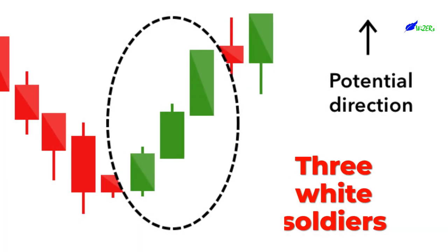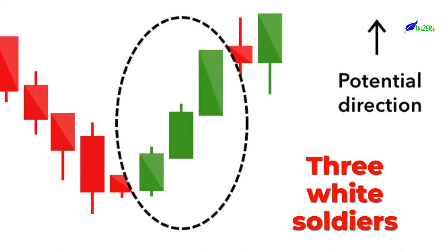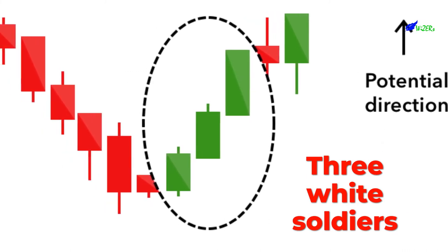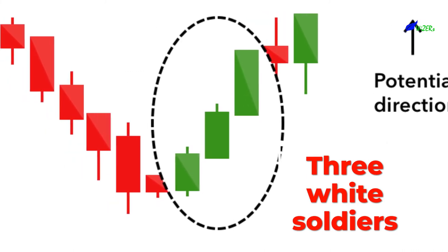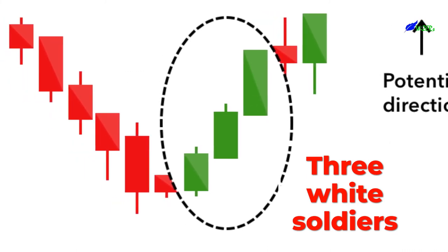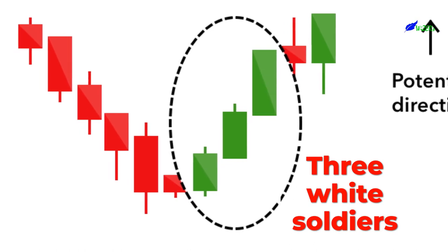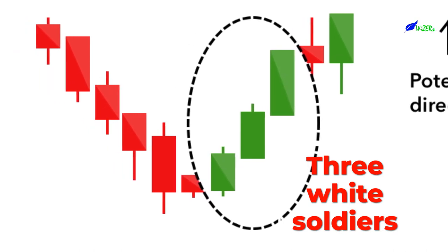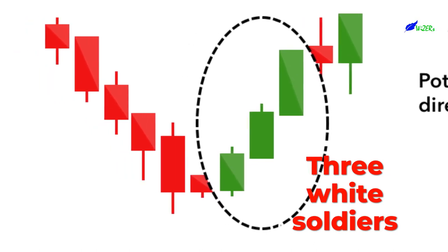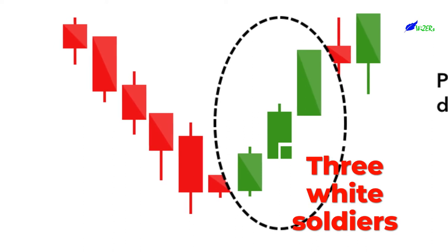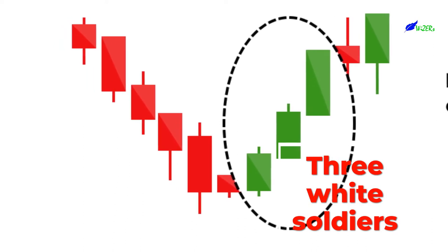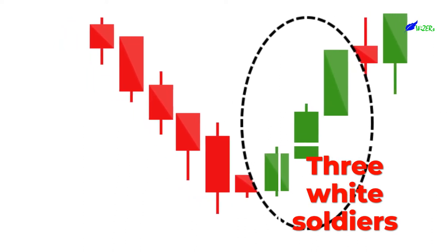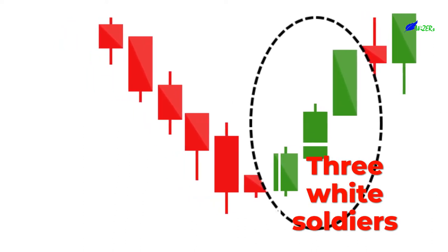Three White Soldiers. The three white soldiers pattern occurs over three days. It consists of consecutive long green candles with small wicks, which open and close progressively higher than the previous day. It is a very strong bullish signal that occurs after a downtrend, and shows a steady advance of buying pressure.